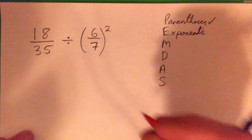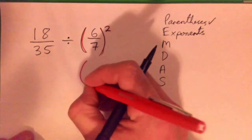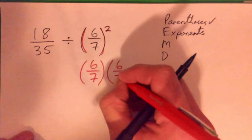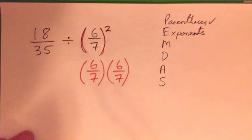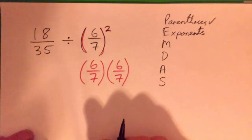All right, we got an exponent, that little number there squared, which means six sevenths times six sevenths, right? And so what does that give us?